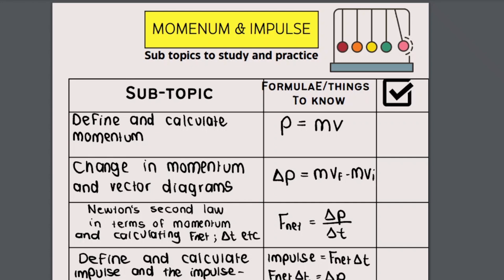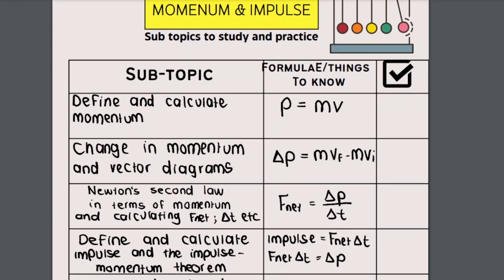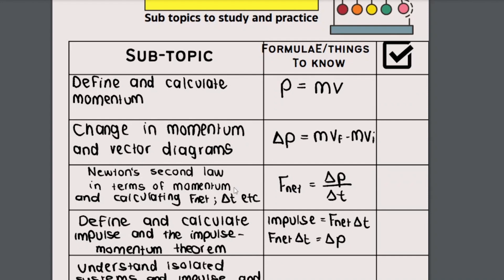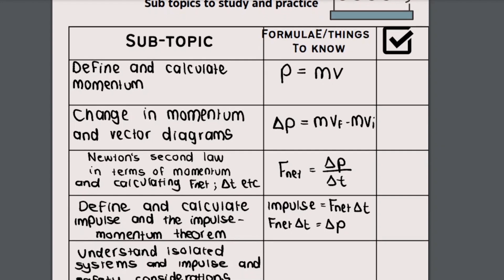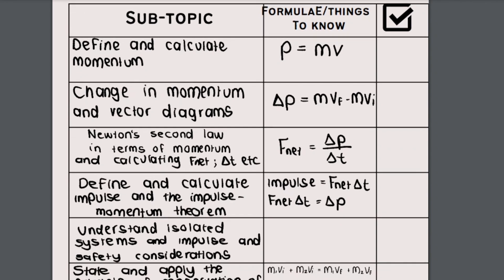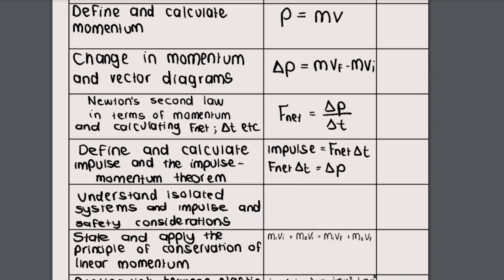Our first topic is called momentum and impulse. As I mentioned, that is a physics topic so it'll be included in paper one. Over here I've listed the subtopics that you can expect. I've included formulae or things to know in this column. First of all you need to be able to define and calculate momentum, change in momentum and vector diagrams. There's also Newton's second law in terms of momentum, then the impulse momentum theorem. You need to understand isolated systems, state and apply the conservation of linear momentum, and distinguish between elastic and inelastic collisions.